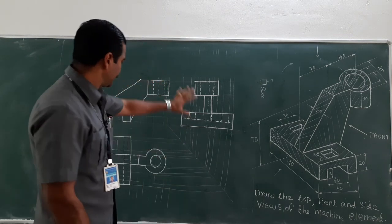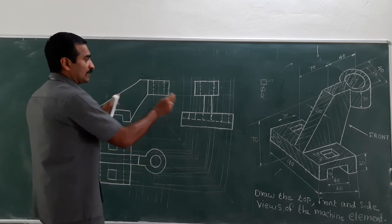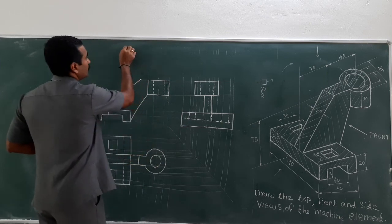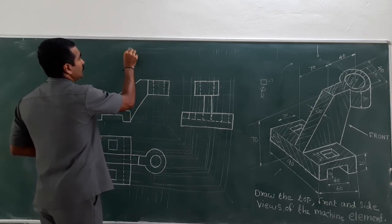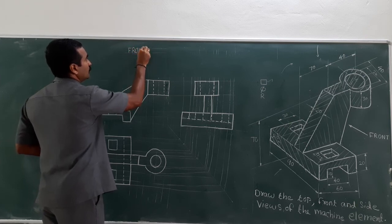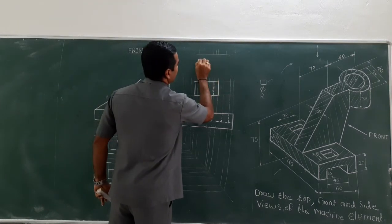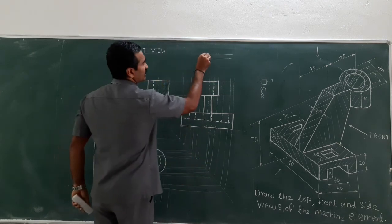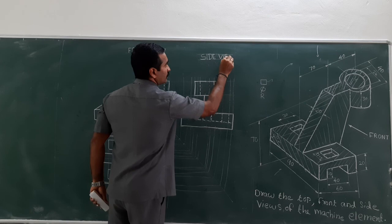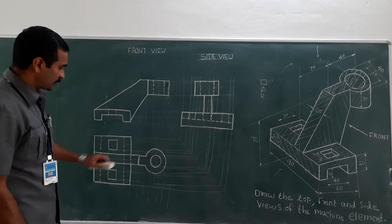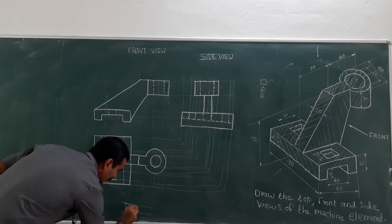With this I have completed all three views of this machine element. Now I need to capture the dimensioning. Before that, let me give the naming for all three views. Using a guideline of 5 mm height: this is the front view — also called elevation — and this is the left side view. You can mention it as side view or left side view. And this view is the plan or top view.